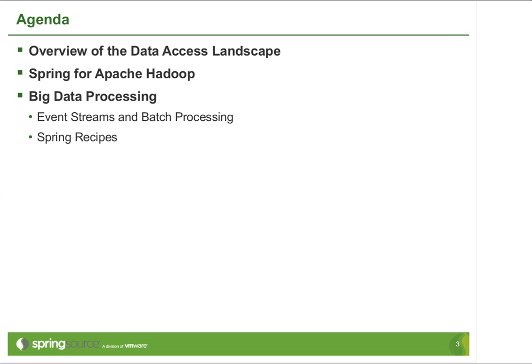In this webinar, I'd like to cover three topics: a brief overview of the data access landscape — as you know, there's been quite a lot of changes in the past six years or so; talk about Spring for Apache Hadoop, with a recap of some features; and focus on big data processing, namely event stream processing and batch processing, using Spring Data, batch and integration together to create solutions in that space.